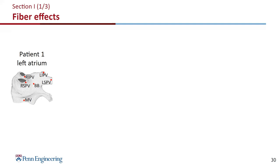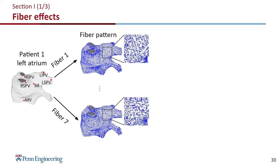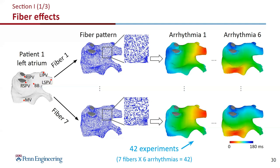The question now is: will the observations from the slab experiment still hold true in the left atrium? So we worked on ex vivo fiber data — high-resolution atrium scans from cadavers. Each one takes 50 hours to scan. We have high-resolution fibers and high-resolution atrial geometries, and what we do is register seven different patients onto the same patient's geometry so the variable is only fiber. For each fiber, we run the same set of six different arrhythmia simulations, creating a total of 42 experiments. Then we compare the results to see how much difference is caused by fiber orientation.